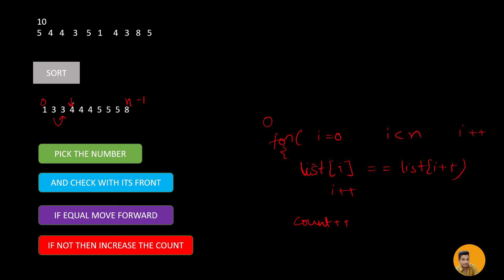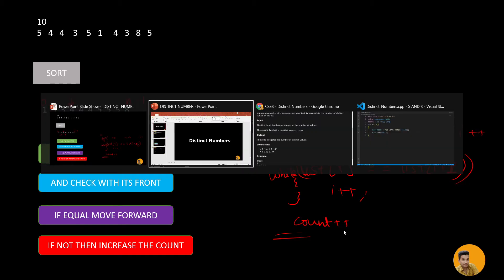Suppose we are standing at a position — we check with its front, meaning i+1. If they are equal, we increase the count. Now standing at the next position, we check with its front again. We keep doing this until we encounter a different number, so we put this in a while loop. While the condition holds, we keep incrementing the index. That's how we increase the count.